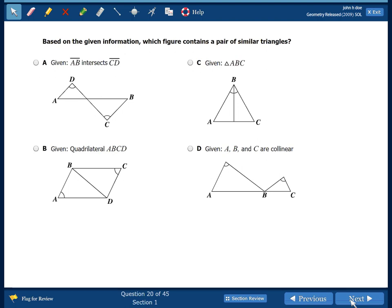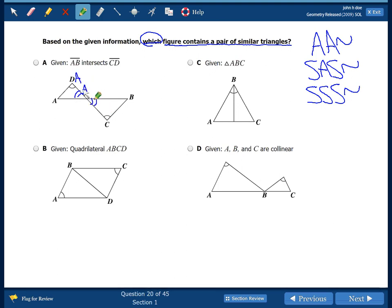So moving on to question 20. This is based on the given information, which figure, so there's our keyword, which figure contains a pair of similar triangles. So there's a number of different ways we can prove triangles similar. We had angle-angle similarity, side-angle-side similarity, and side-side-side similarity. So the easiest one is angle-angle. If we have two angles that are congruent, two pairs of angles, then the triangles will be similar. Well, we see vertical angles right here. So we have two angles in each triangle. So just like that, we're done with question 20. It's A. Angle-angle.